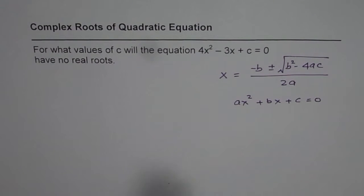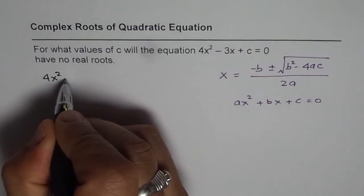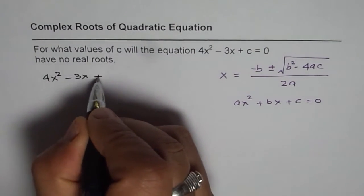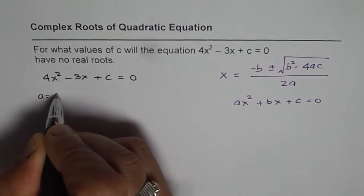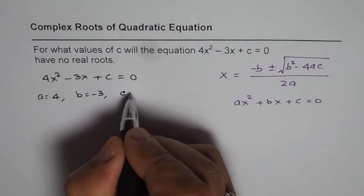Now, we are given the equation 4x² - 3x + c = 0. Let me write it here. Here, a = 4, b = -3, and c is c.